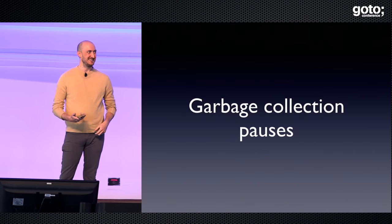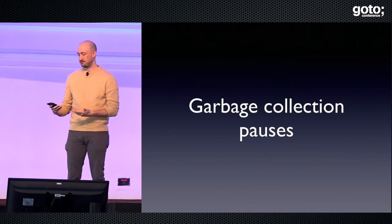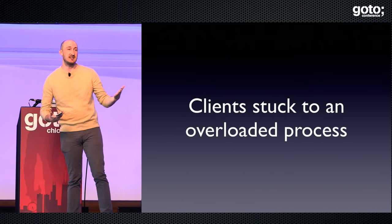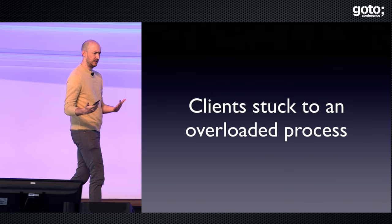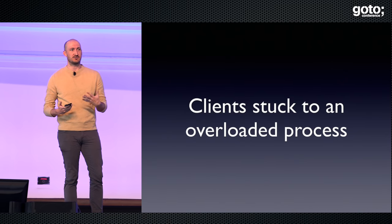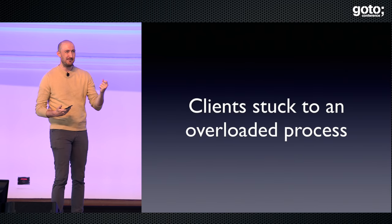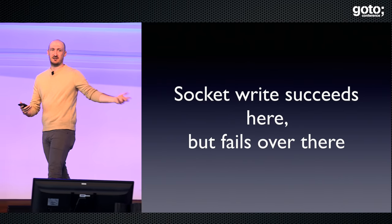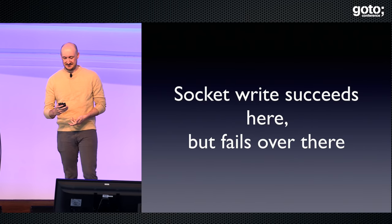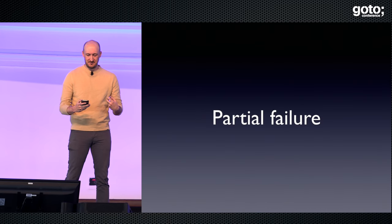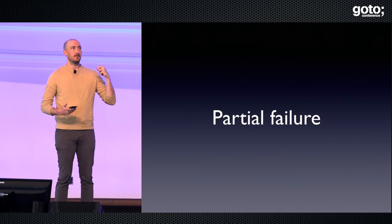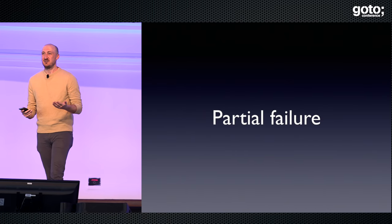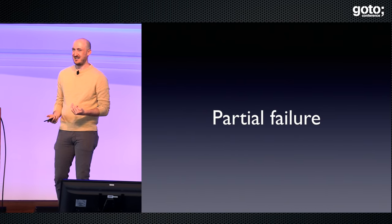It often looks like a network problem — engineers come to me saying they've got network issues because they're seeing unusual network I/O from certain machines, and I have to ask what's going on with their heap. Another thing: a client might get stuck to an overloaded process with a very long socket connect timeout, and over time some of your clients just gather and all try to connect to this one machine over and over. And of course there's the MongoDB problem, where you do a socket write and it says it worked, but on the other side it fails. These are all partial failures — distributed systems kind of work all the time, but they're also always failing a little bit.